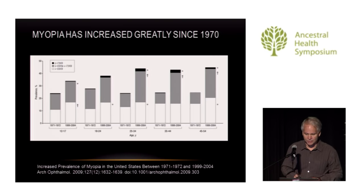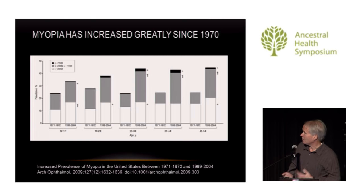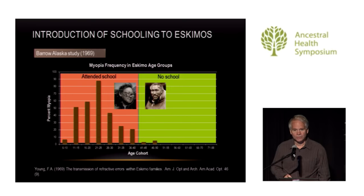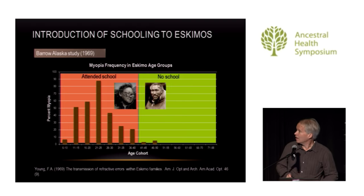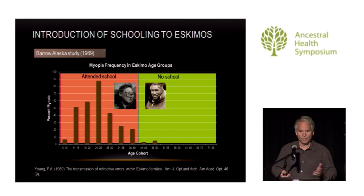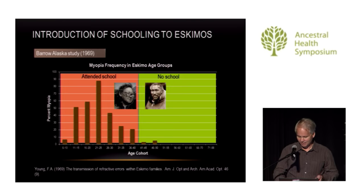More recently, myopia has really increased since 1970 in all age groups. The incidence has almost doubled, with particularly large changes in the more severe or advanced types. Looking at aboriginal peoples — a study by Francis Young in 1969 in Alaska — those older than 40 who had not had Western education had virtually no incidence of myopia, whereas those introduced to Western schooling had in some cases more than 50% incidence. Again, evidence of an environmental factor.